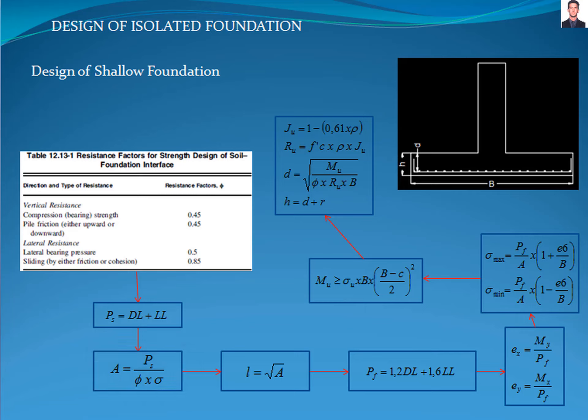The next step is to calculate the dimensions of the foundation, which for a square footing is calculated with this formula, where L is each side dimension and A is the foundation area required. Now we calculate the factored load Pf and eccentricity in the x and y directions through bending moment with these equations.